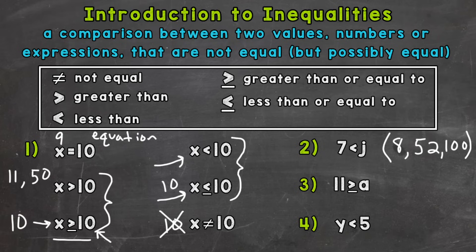For number 3, we have 11 is greater than or equal to a. So for a, solutions could include anything less than or equal to 11. So 11 would be a solution because we have 'or equal to,' and then anything less than 11 — so it could be negative 1 or 3. An infinite amount of solutions: anything less than 11 or equal to 11 would work.